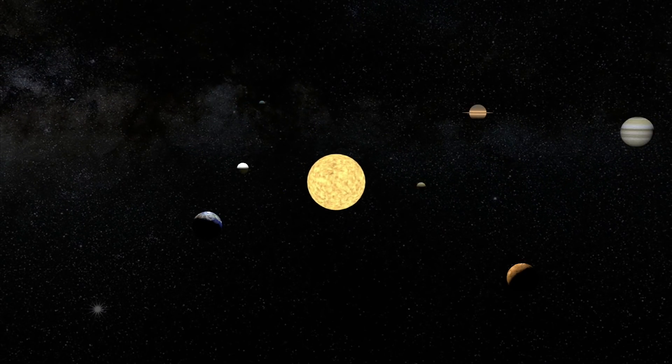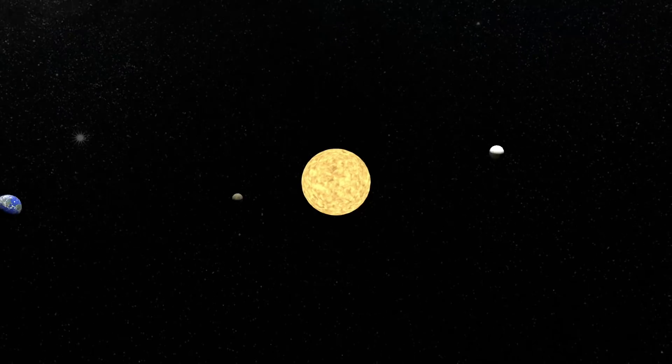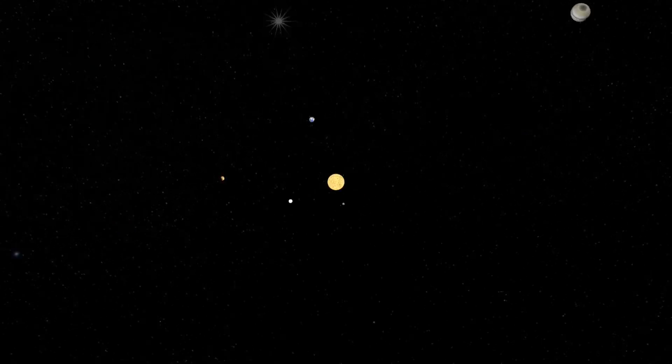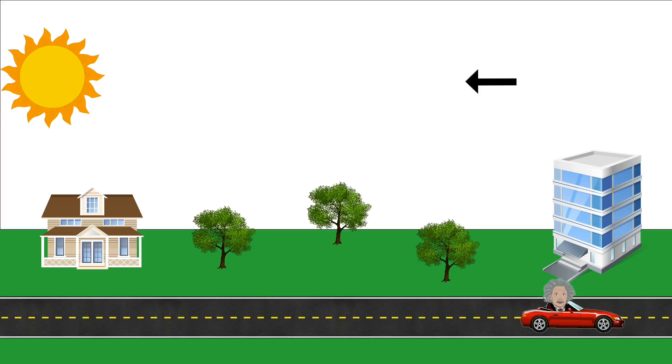The only way to truly travel backwards in space, then, would be to rearrange all the objects you are moving relative to into a position that is in perfect relation to where they were when you were first at your prior location. That is, you would have to travel backwards in time.